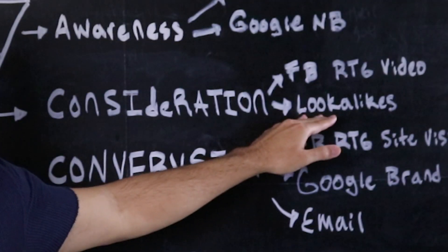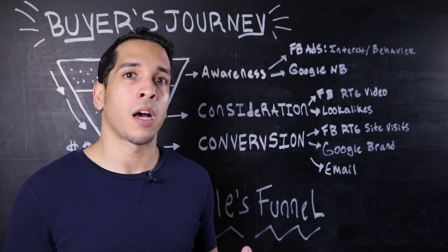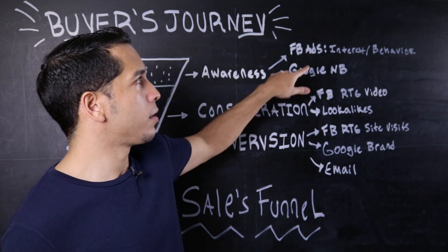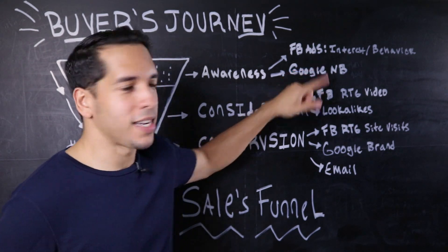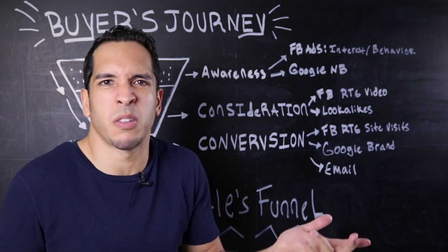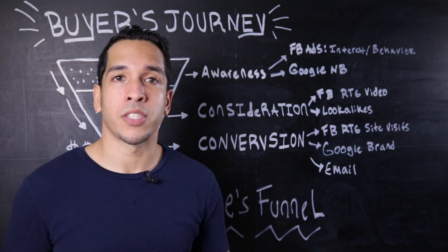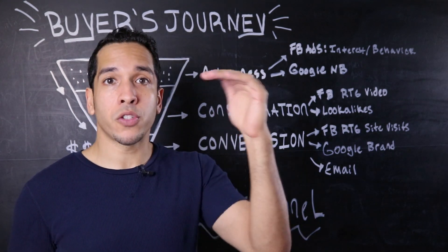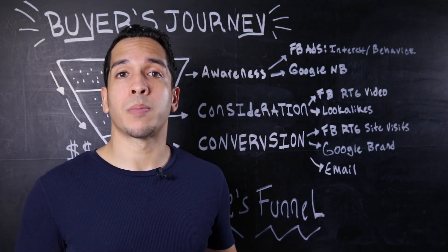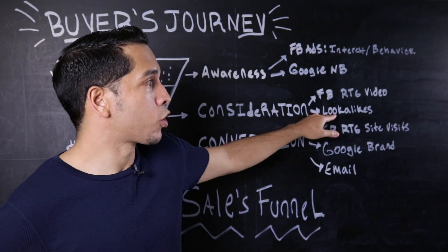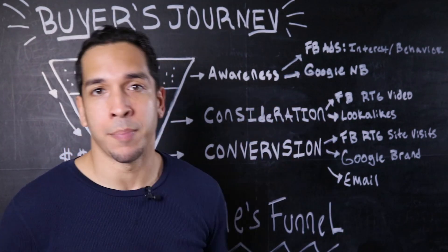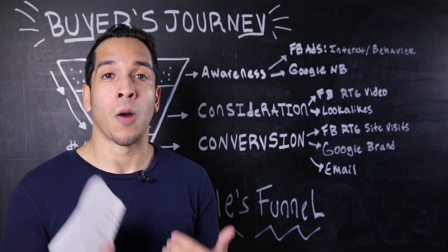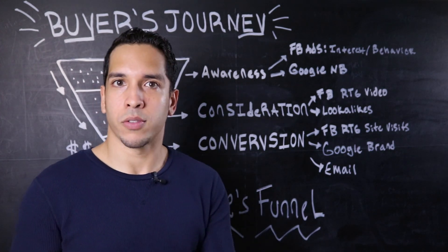Another thing you can do is build lookalike audiences. If you're not familiar, you upload your customer seed list or email list to Facebook. If you've run successful campaigns and now have at least 200 sales or 200 emails, you can input that into Facebook and build a 1% lookalike audience — meaning 1% of the country's Facebook population that matches the profile of your previous customers. In my experience across every campaign I've built, lookalike targeting has always significantly outperformed interest and behavior targeting.